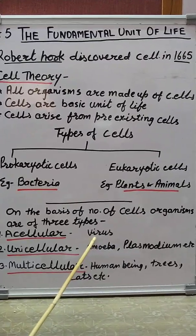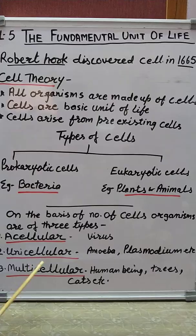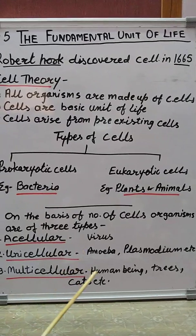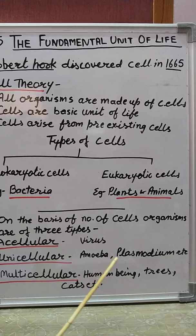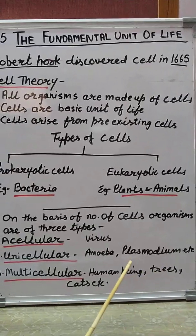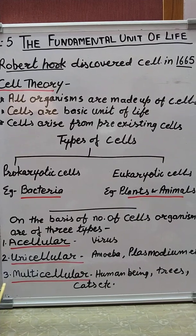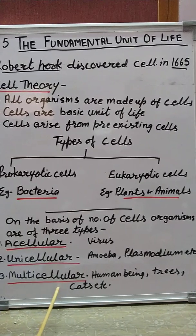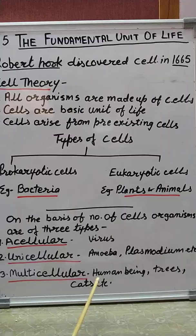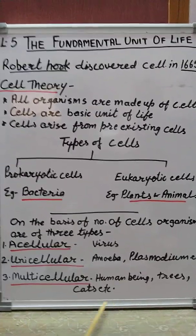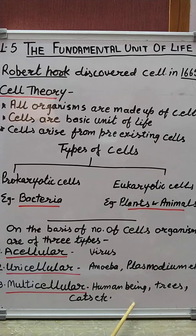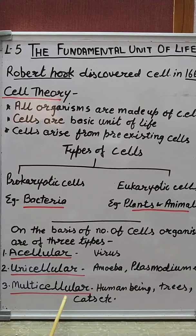Unicellular organisms are made up of only one cell. Amoeba is a well-known unicellular organism; others include Plasmodium and yeast. The third type is multicellular organisms, which contain more than one cell. Examples include human beings, trees, cats, dogs, and elephants — these are all considered multicellular organisms.